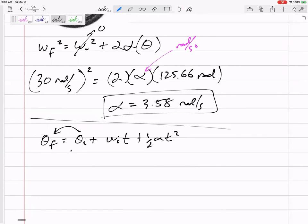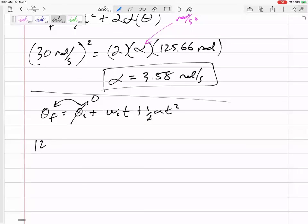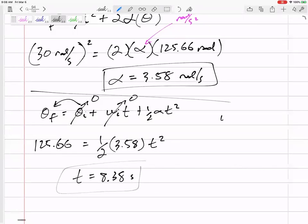So again, you know, assume that you start at a theta of zero, or just bring it to the left hand side and call that delta theta. My delta theta is 125.66 radians. Started with initial velocity of zero. One half alpha t squared. Get a t of 8.38 seconds. We could have used omega final equals omega initial plus alpha t. We would have gotten the same answer. Would have gotten the same time, 8.38 seconds.